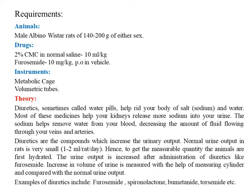The instrument we will use to check the diuretic activity is called the metabolic cage. The urinary volume will be checked using volumetric tubes. The metabolic cage is arranged in such a way that it helps in accumulating the urinary output of the mice or rat, and after accumulation we can measure it in a volumetric tube to get the exact amount of urinary output.